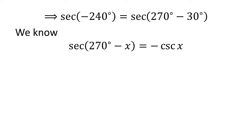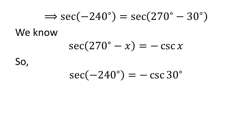As we know, the trigonometry identity secant of 270 degrees minus x is equal to minus cosecant of x. The video explaining how to derive this identity is appearing in the upper right corner, and the URL address has been mentioned in the description section. Let us apply the above identity for secant of minus 240 degrees. Here x is 30 degrees, so secant of minus 240 degrees is equal to minus cosecant of 30 degrees.